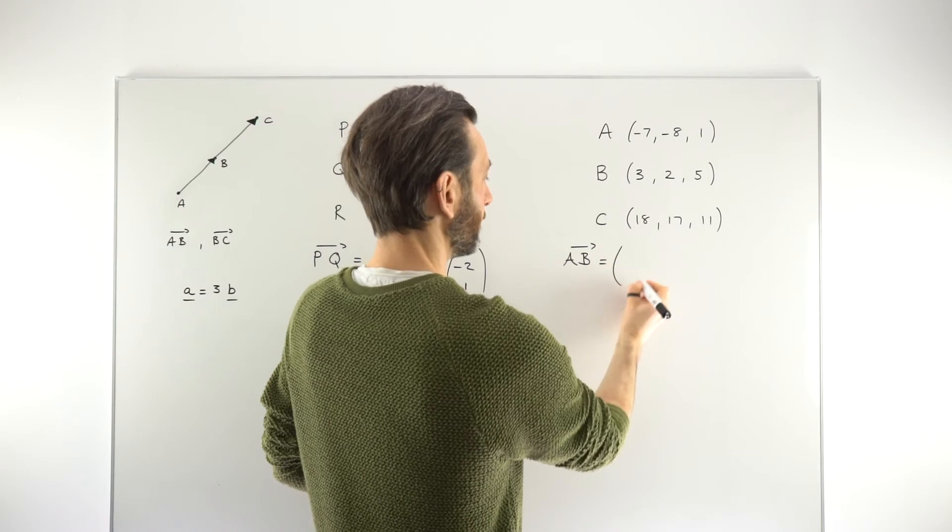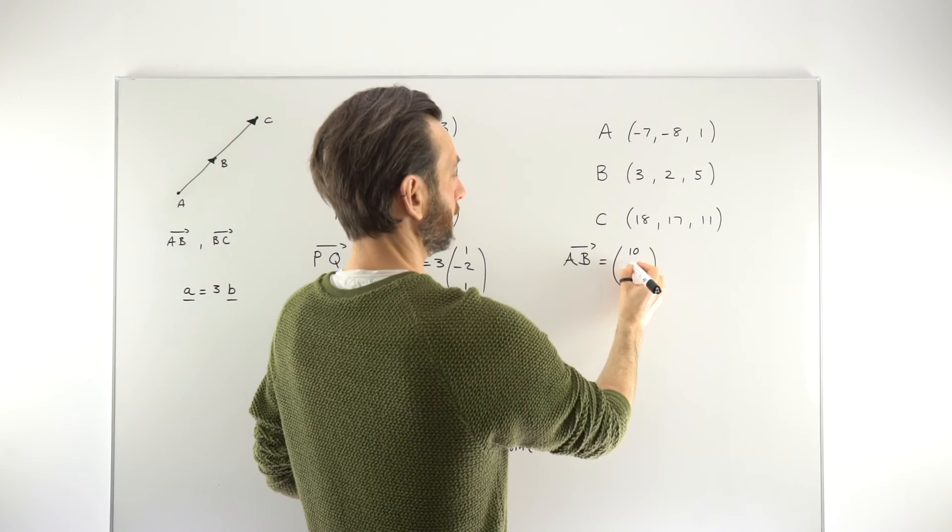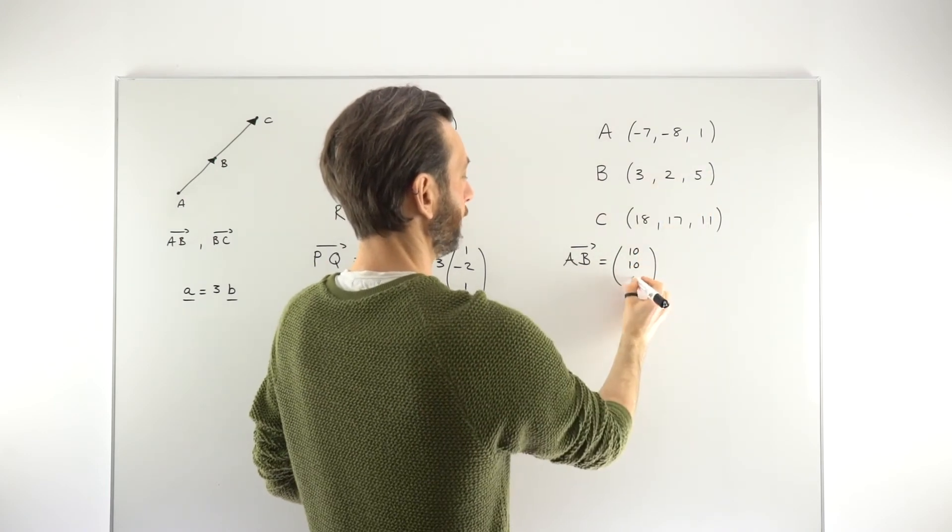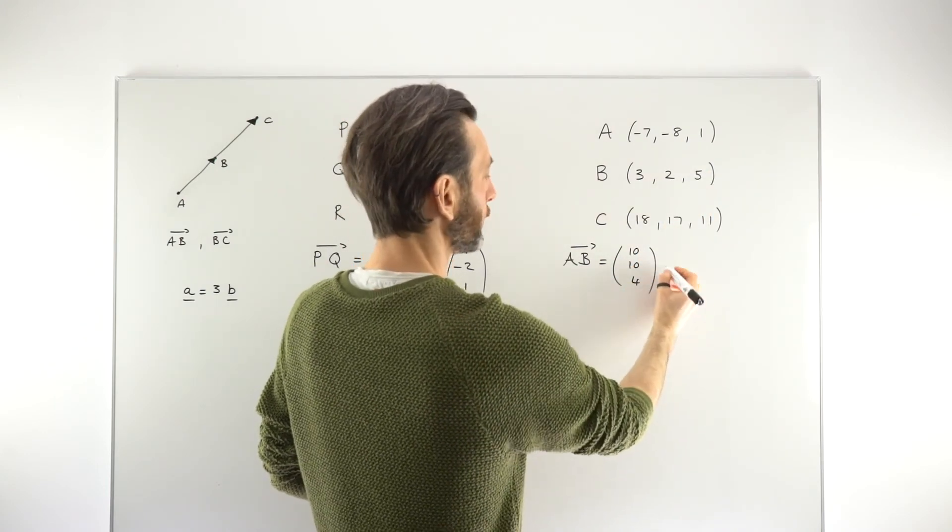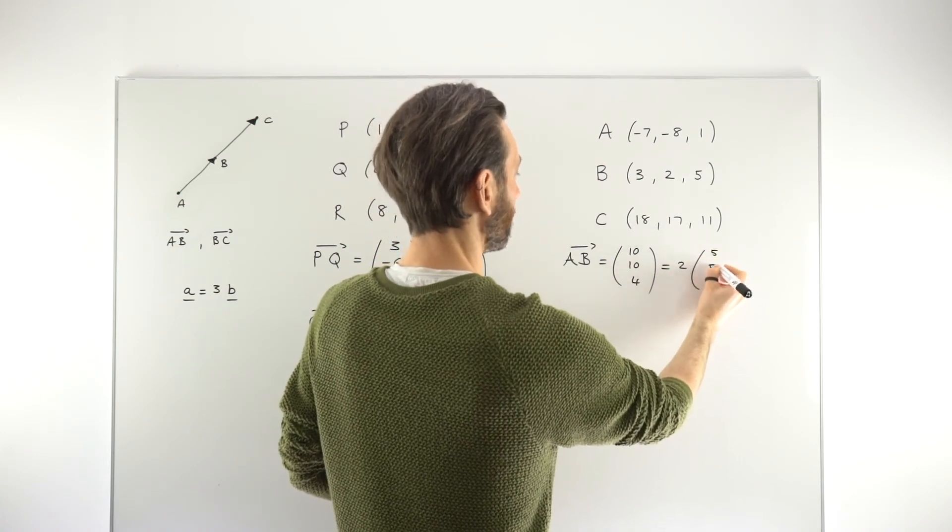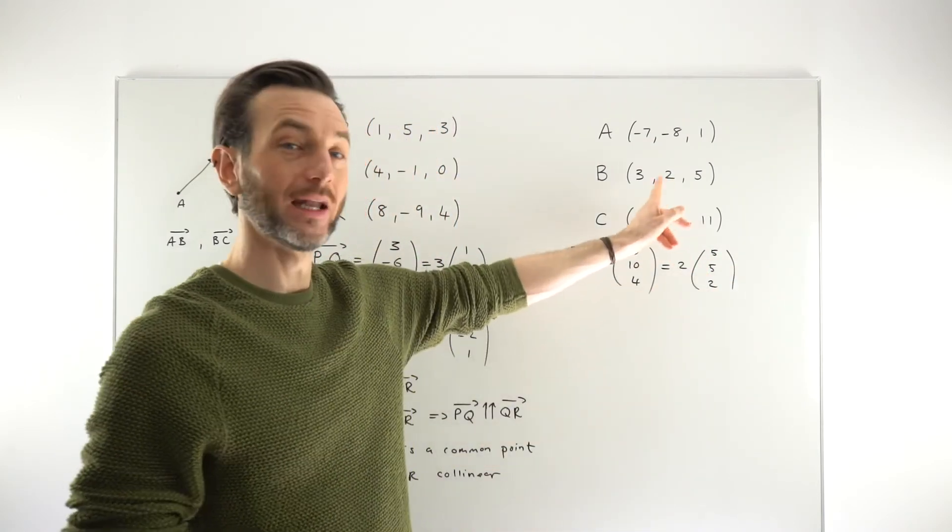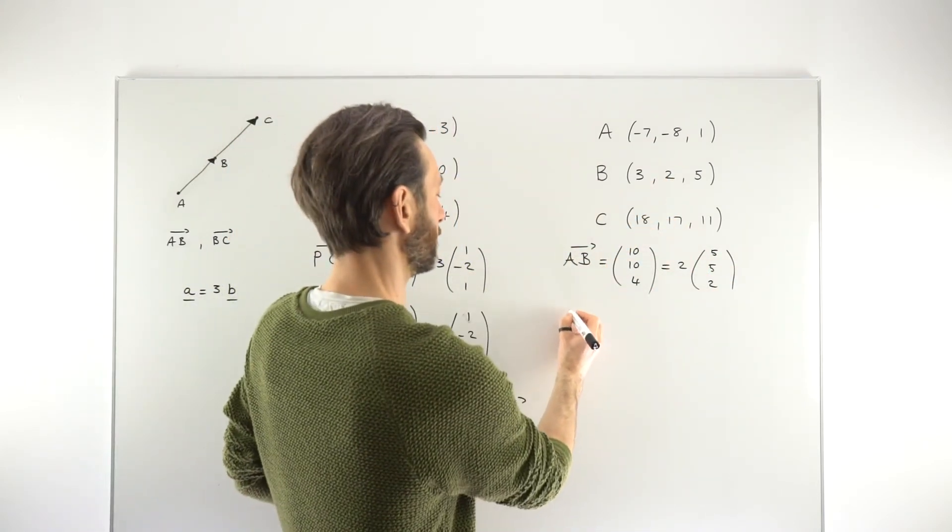So just constructing your vectors again. So AB minus 7 to 3 is 10, and then 10 again, and then 4. So I might just go ahead already and pull out the common factor. So that's going to be 2, giving us a base vector of 5, 5, and 2. We expect to see that base vector again in our next vector, which is the vector BC. That's just the way these questions need to go.